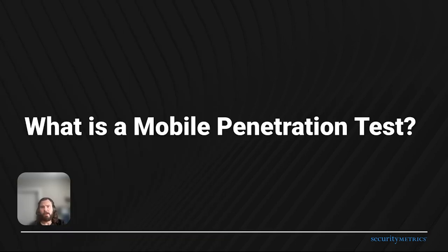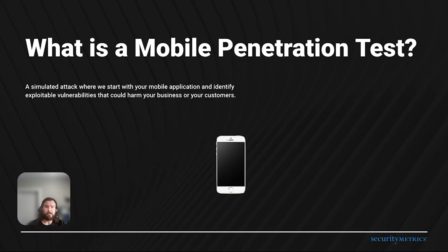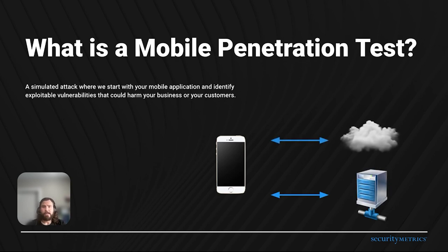First, we'll address the fundamental question: what is a mobile penetration test? In simple terms, it's like a friendly controlled attack on your app. We're essentially putting on our hacker hats and trying to break in, but with the goal of helping you, not harming you. We start with your mobile application and try to find any weak spots — any vulnerabilities that a real attacker could exploit to cause damage to your business or even worse to your customers. Our main mission is to assess the overall security of your app and everything that makes it tick. That includes the mobile app itself, but it also extends to the APIs or backend systems that your app talks to. If there are any cloud resources involved, those are in scope too.